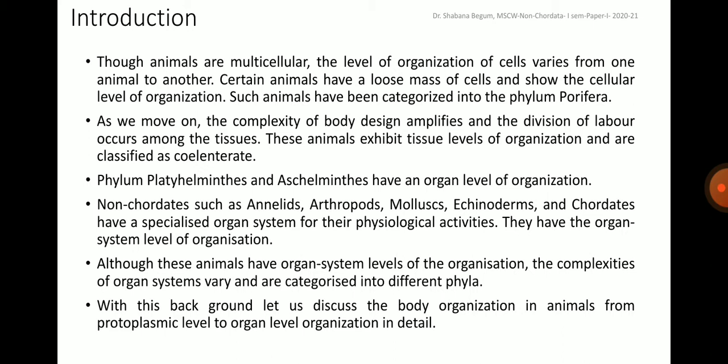Phylum Platyhelminthes and Aschelminthes forms have an organ level of organization. Non-chordates such as annelids, arthropods, molluscs, echinoderms, and chordates have a specialized organ system for their physiological activities — they have the organ system level of organization. Although these animals have organ system levels of organization, the complexities of organ systems vary and are categorized into different phyla. With this background, let us discuss body organization from protoplasmic level to organ level organization in detail.